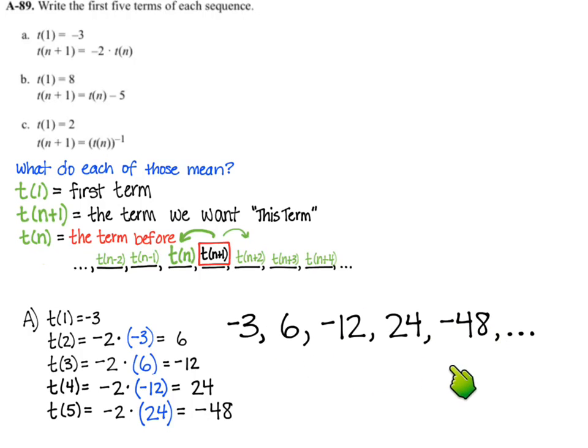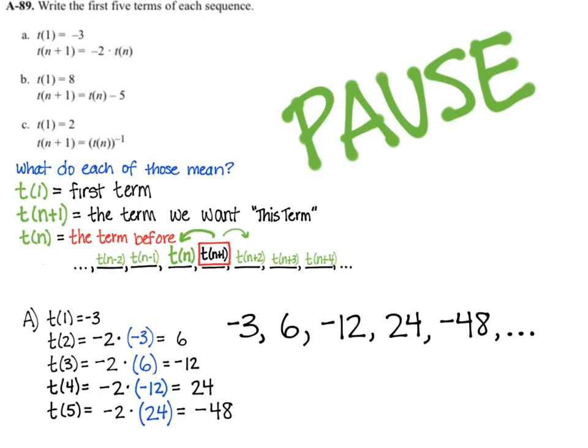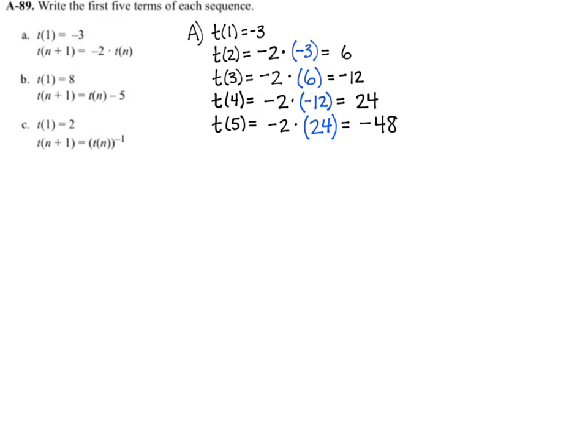And you might notice a different way to think of this pattern, but this right here was doing it recursively to find any given term. You had to use the previous term and multiply it by -2. So you can pause if you need to look at that a little longer, but I'm going to move forward. All right, we've got A.